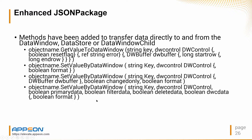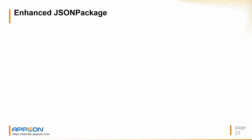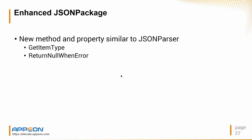There's an optional boolean format flag. You can specify starting row, ending row, starting column, and ending column. A new method and property have also been added to the JSON packager similar to the JSON parser: getItemType, which determines the type of data in the JSON and allows you to dynamically respond to it, and returnNullWithError, which controls whether accessing a non-existent value throws an exception or just returns null.